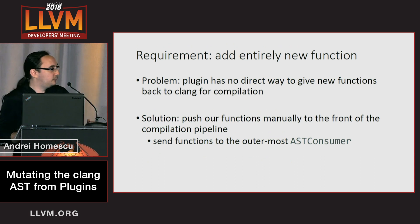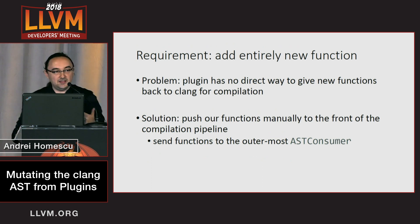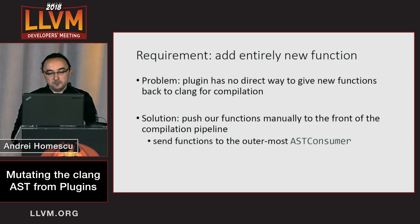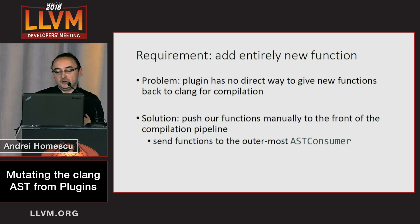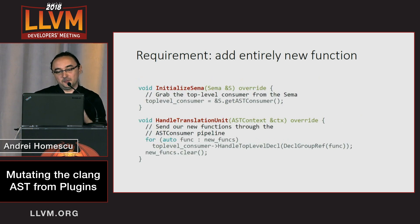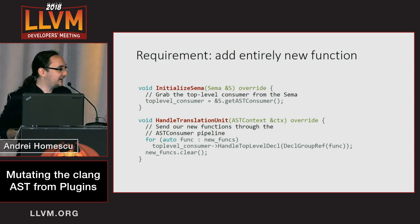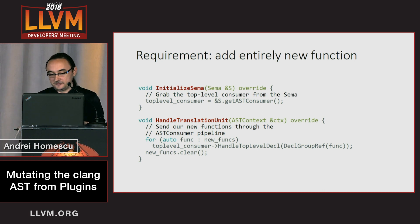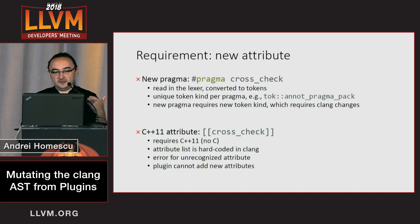The second problem was we wanted to add our own new helper functions. There's no direct way to pass them back to Clang, but we actually managed to do it with a little bit of a hack, where we grab the AST consumer and just force feed our functions to it.